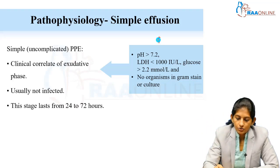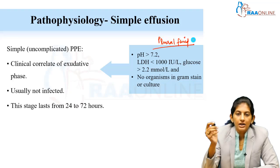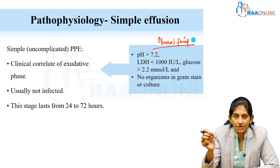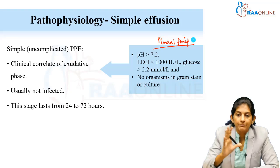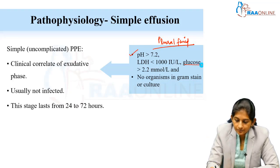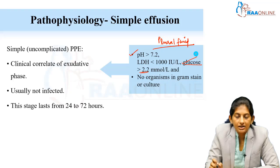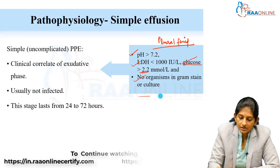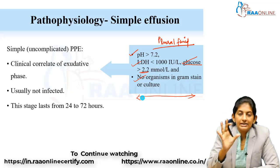The typical pleural fluid findings in simple effusion: pH is normal — a pH less than 7.2 indicates infection, so in simple PPE pH is more than 7.2. Glucose is normal, meaning more than 2.2 mmol/L. Gram stain and culture show no organisms. Pleural fluid LDH is less than 1000 IU/L. If you get these findings, it is only a simple parapneumonic effusion — the pleural space is not yet infected.